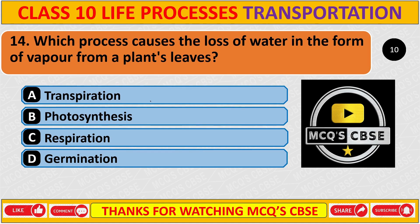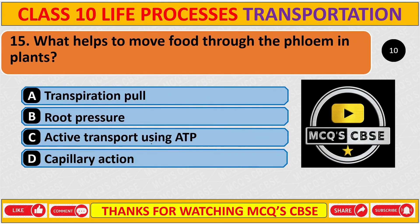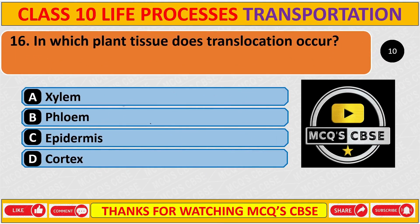Which process causes the loss of water in the form of vapour from plant leaves? The correct answer is A: transpiration. What helps food move through the phloem in plants? The correct answer is C: active transport using ATP. In which plant tissue does translocation occur? The correct answer is B: phloem.